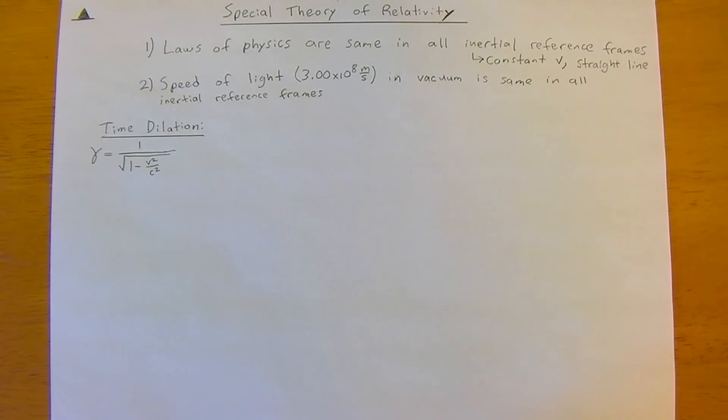So they thought that light needed a medium to propagate through the ether. But through experimentation, this was proven false by Michelson and Morley experiments.